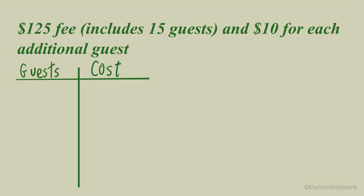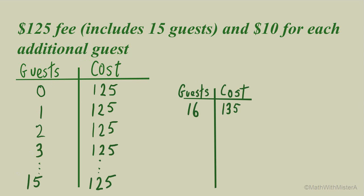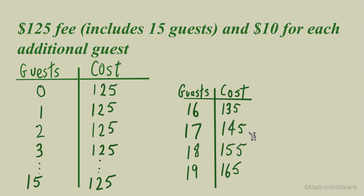The green option is a little more complicated. We start with a flat fee of $125, which contributes to the total cost without any guests. Adding the first guest doesn't change the total cost because the green plan includes 15 guests with the $125 fee. It's not until the 16th guest that we increase the cost beyond $125, and each guest after that adds another $10. The original rate of change is actually zero, but once we go past 15 guests the constant rate of change becomes $10 per guest.